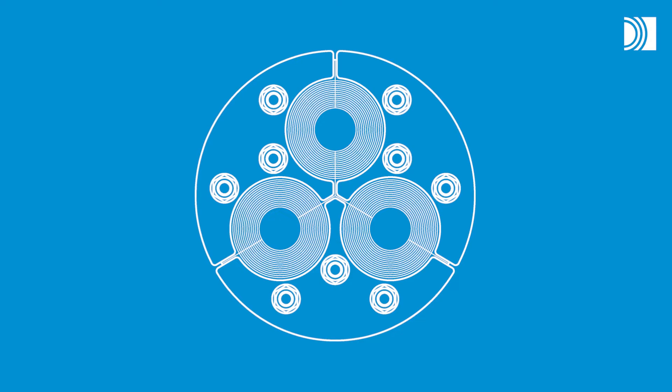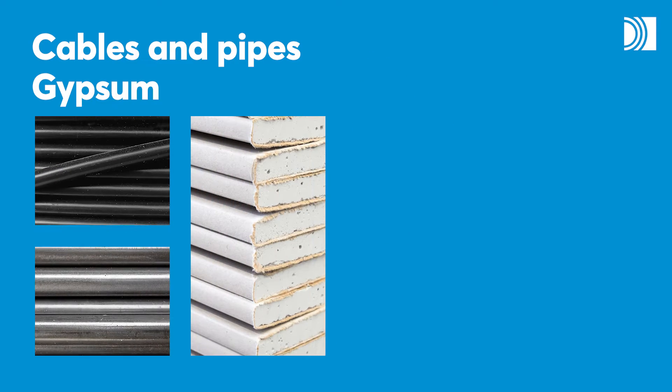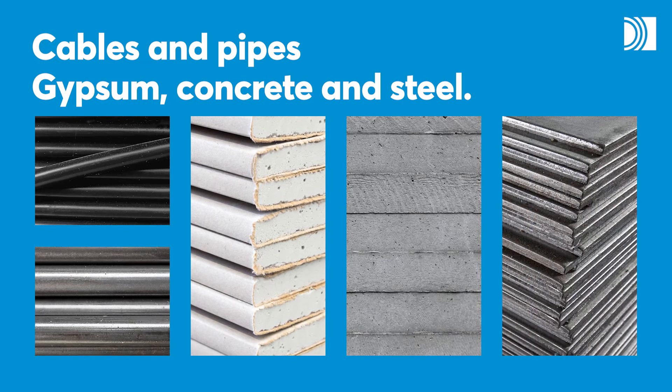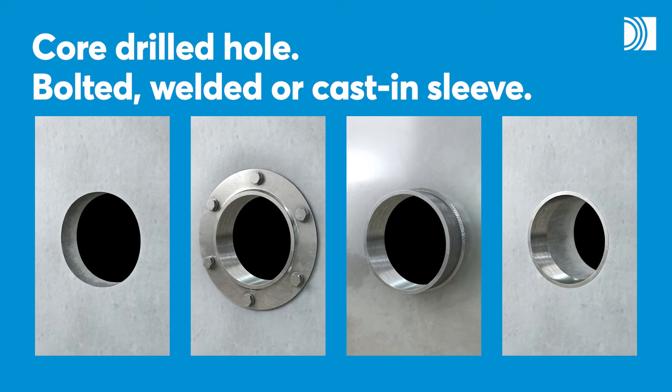With a Roxtec H3 seal, you can seal openings for cables and pipes in different structures such as gypsum, concrete and steel. You can install it in a core-drilled hole or a bolted, welded or cast-in sleeve.